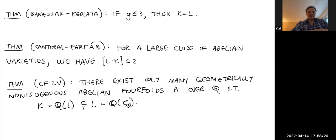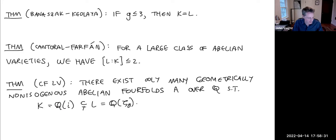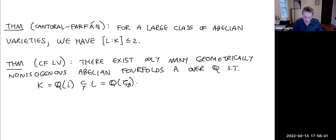Let's dig into what this family is. Where should we look for examples where L ≠ K? We should reduce to the geometrically simple case. The Albert classification of abelian varieties comes in four types organized by endomorphisms: Type I is real multiplication, Types II and III are quaternionic multiplication, and Type IV is complex multiplication.